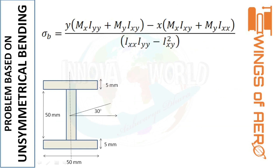Using the bending stress formula: σb equals [Mx·Iyy + My·Ixy] · y minus [Mx·Ixy + My·Ixx] · x, all divided by (Ixx·Iyy − Ixy²). Since we now know all values, after substituting we obtain the general equation for this section: σb equals 0.54y minus 1.12x.